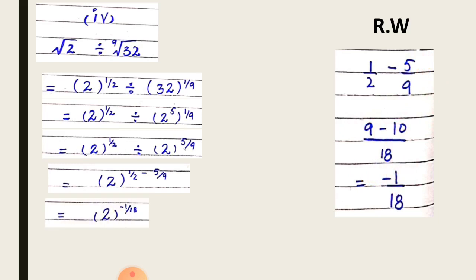So we get 18 in the denominator. 2 goes into 18 nine times, so 1 times 9 is 9. And 9 goes into 18 twice, so 5 times 2 is 10. So 9 minus 10 is minus 1 by 18. Then the answer is 2 on the whole power minus 1 by 18.